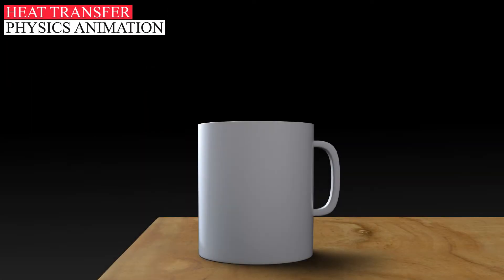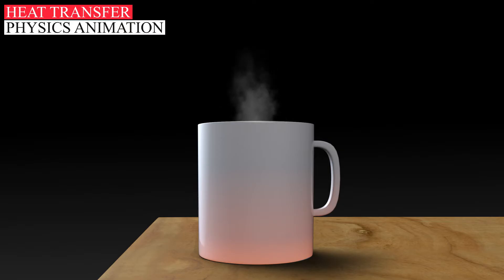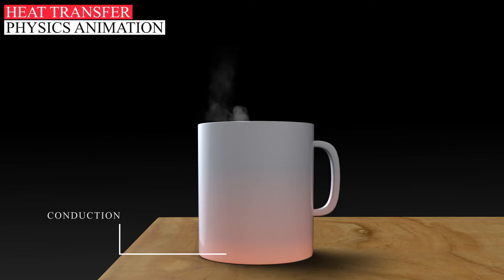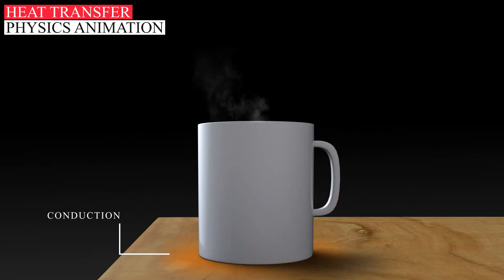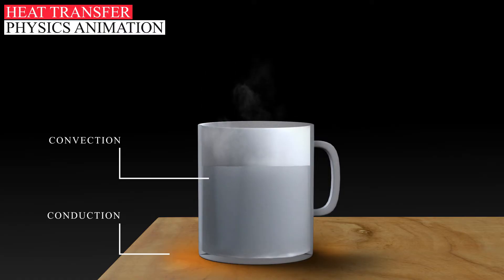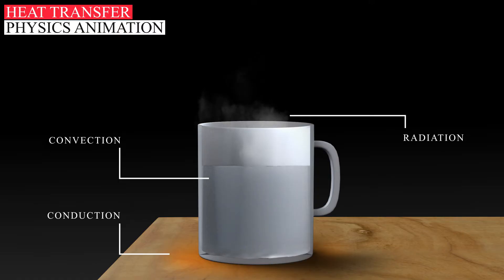The process of heat transfer also occurs when an object cools. If a mug of hot coffee is left standing on a cold kitchen countertop, its temperature will gradually decrease as heat is lost. Heat energy dissipates by conduction through the mug to the tabletop, by convection as the liquid rises, cools and sinks, and by the radiation of heat into the surrounding air.